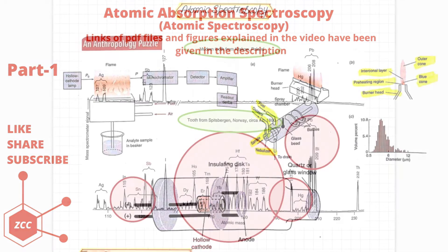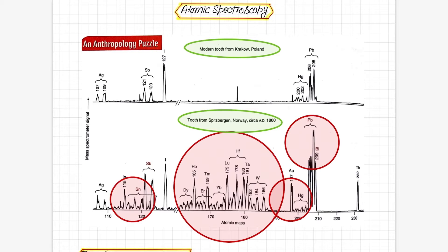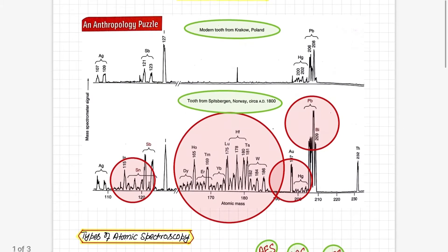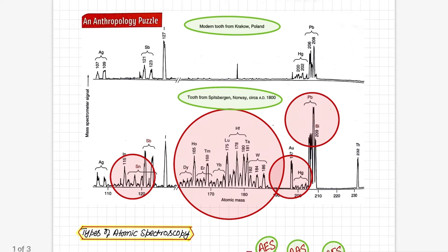First of all, we shall see what is the importance of atomic spectroscopy. Here we have an anthropological puzzle which we need to solve. If you see here, this is a tooth which has been obtained from Norway region. Norway lies in the Scandinavian region and the concentration of lanthanides and actinides is highest in the earth's crust in Norway, Sweden, and Denmark.